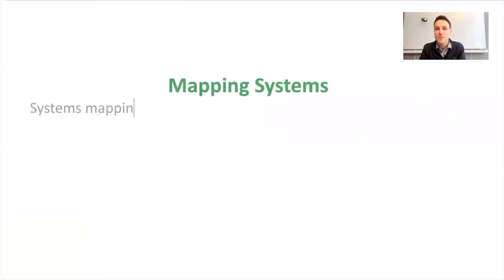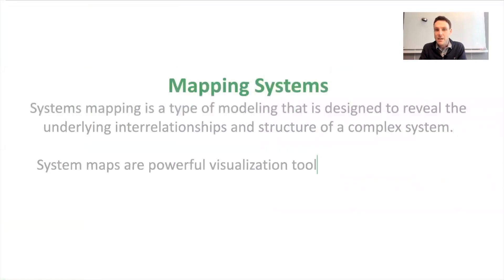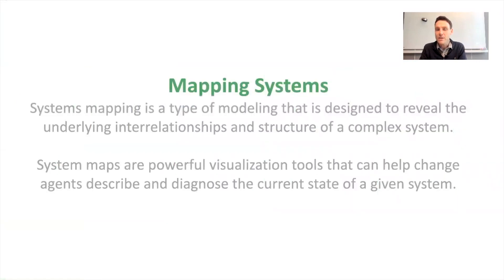So what are systems maps? This is a type of modeling that's designed to reveal the underlying interrelationships and structure of a complex system. It's a powerful tool for representing or visualizing complex systems or complex situations and helping us to understand the dynamics of that system and thus ways that we may intervene or change the system.